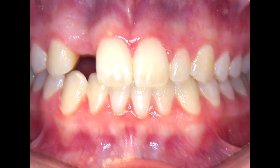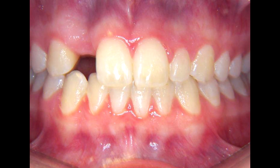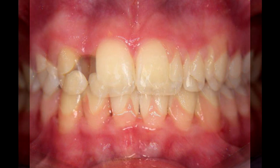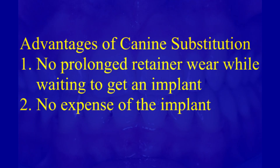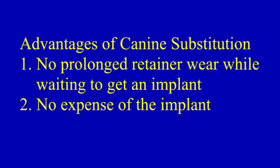Now let's take a look at the second option of closing the missing tooth space and substituting the canine for the missing lateral incisor. With this option, the missing tooth space is closed orthodontically along with whatever orthodontic problems that may be present. The advantage of this option is that no artificial tooth is needed on the retainer, no prolonged retainer wear is needed, and no implant is needed — which is a significant economic advantage.